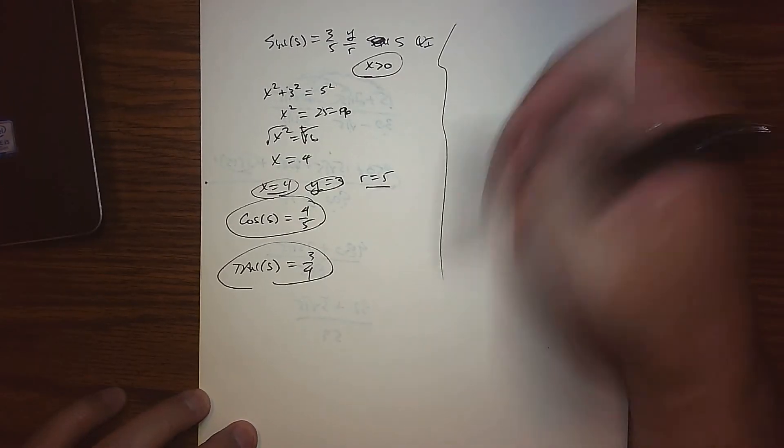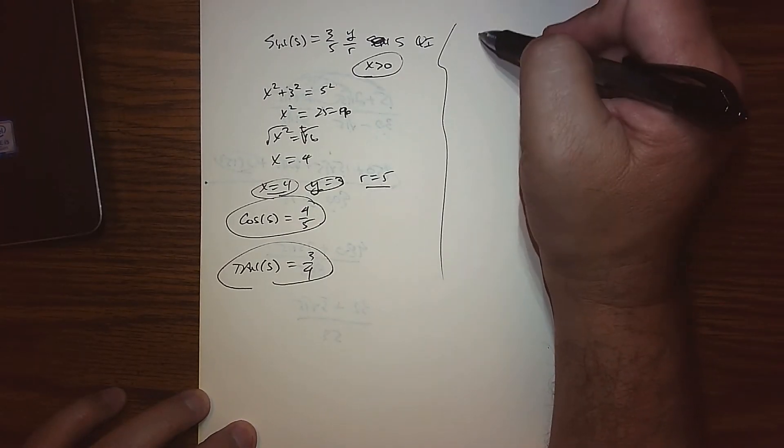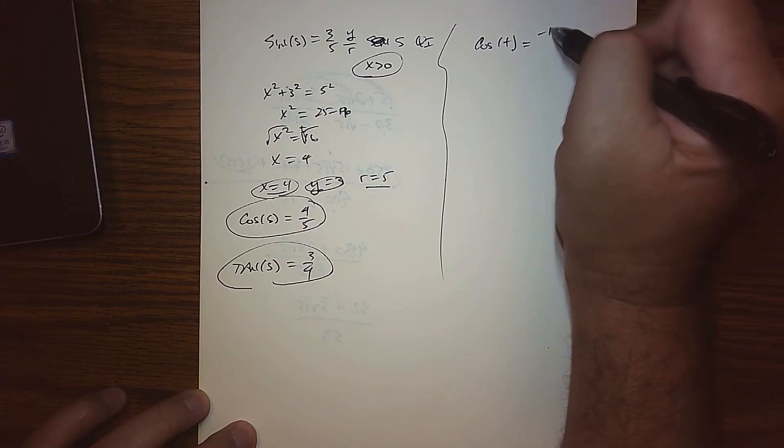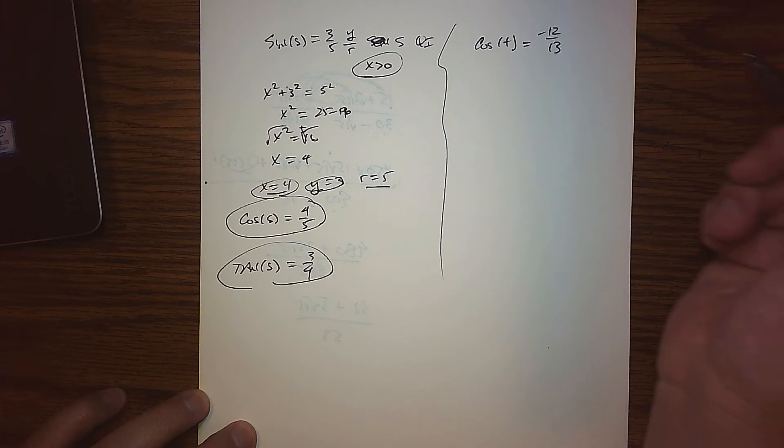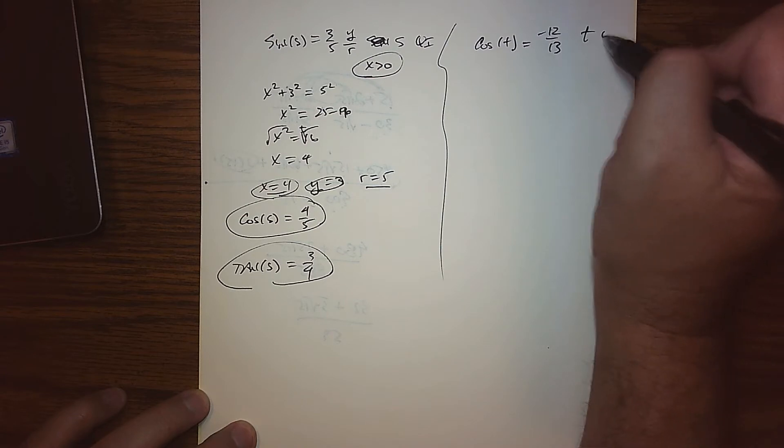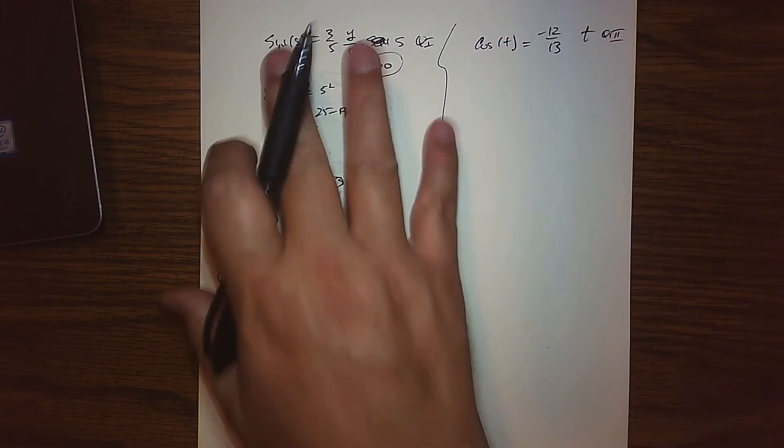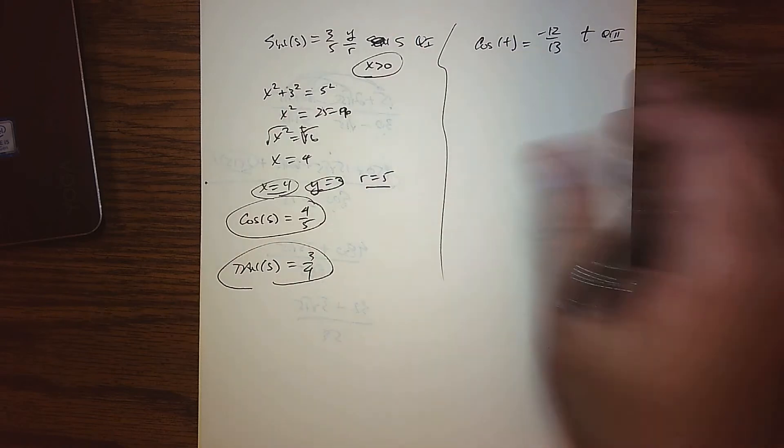So what about t? So for t, we know that the cosine of t is equal to negative 12 over 13. And t, we're told, is in quad 3. And so we need to know what the sine of t and the tangent of t is. What I'll do in this case is, since I've used x, y, r's, how about we use the identities?